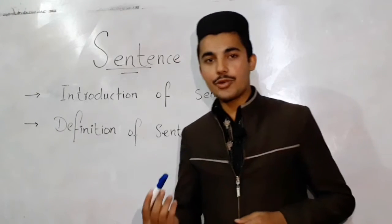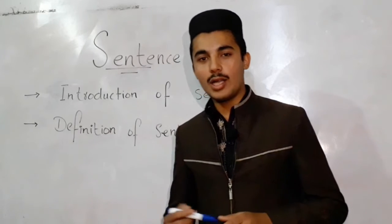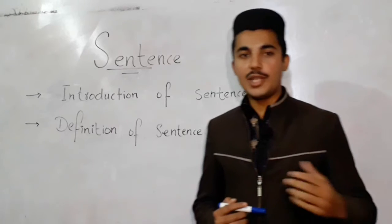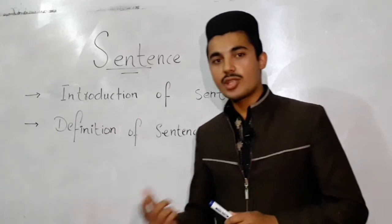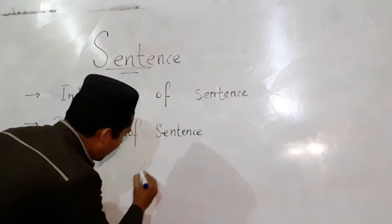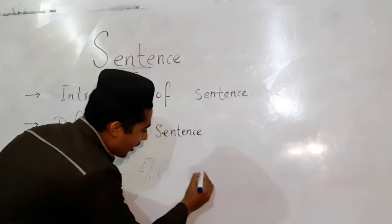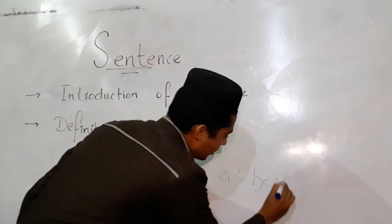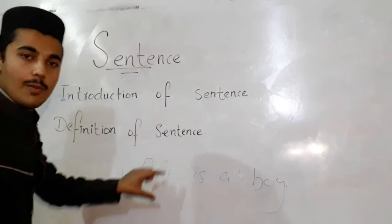Then I want to tell you the general definition of sentence. A word or group of words which give us complete meaning or complete things is called a sentence. For example, 'Ali is a boy.' This is called a sentence. It gave us complete meaning.